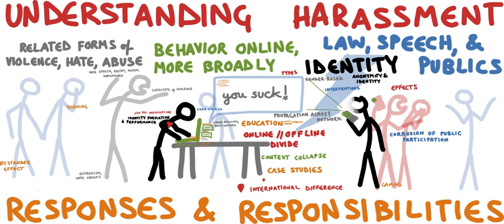Cyber extortion occurs when a website, email server, or computer system is subjected to or threatened with repeated denial of service or other attacks by malicious hackers. These hackers demand money in return for promising to stop the attacks and to offer protection. According to the Federal Bureau of Investigation, cybercrime extortionists are increasingly attacking corporate websites and networks, crippling their ability to operate and demanding payments to restore their service. More than 20 cases are reported each month to the FBI and many go unreported in order to keep the victim's name out of the public domain. Perpetrators typically use a distributed denial of service attack.